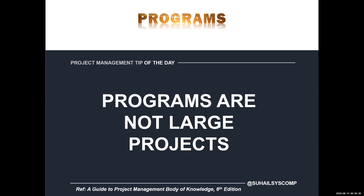Initiation contains those processes which kickstart the project and allow it to begin. Planning consists of processes which plan different segments of project management — there are 10 different knowledge areas or areas of specialization such as schedule management, cost management, and so on. Everything is planned in detail to create a comprehensive project management plan. Once that is done, the project management plan goes into execution.